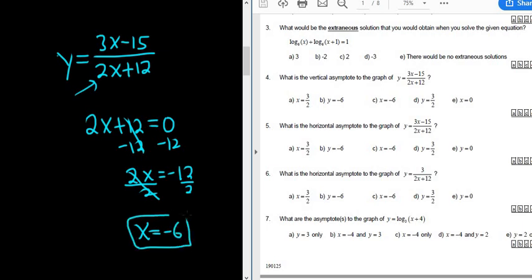So that is the equation of the vertical asymptote. And the choice is c. That's it.